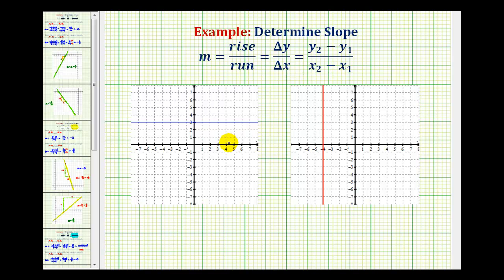First, let's go ahead and select two points on this line. Let's say we select this point here and this point here, where this point has the coordinates 2, 3 and this point has the coordinates 6, 3.